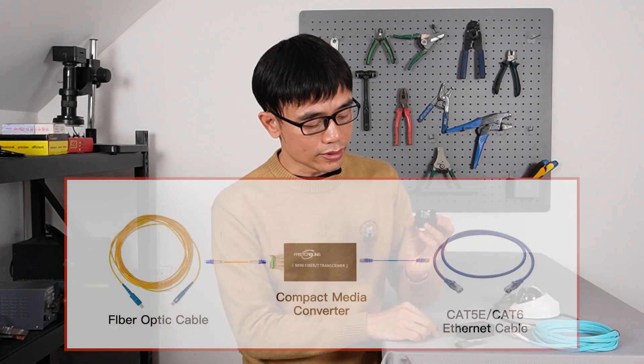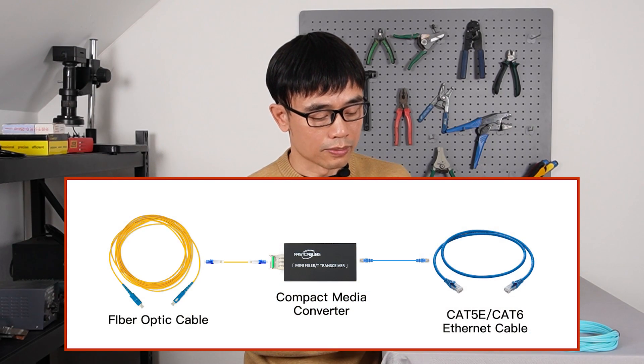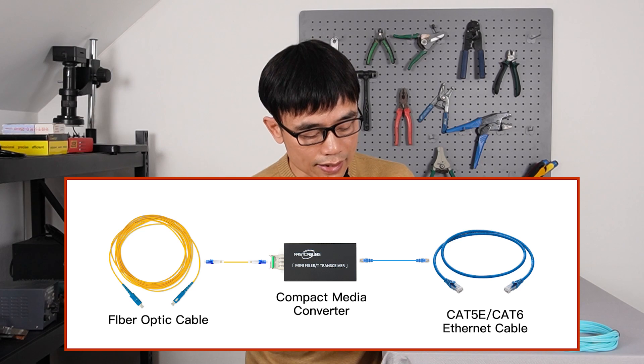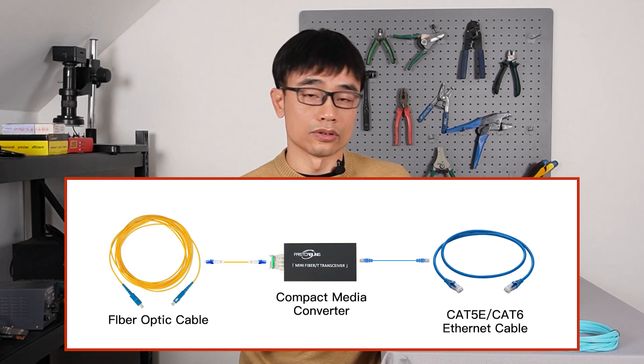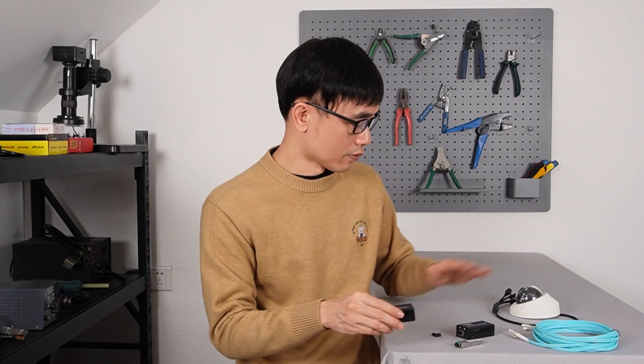The media converter will convert the fiber optic signal to electronic signal. There are two sides. On one side, we can connect the fiber optic cable to the media converter. On another side is the RJ45 network port, so we can use Cat5 or Cat6 Ethernet cable to connect this media converter to the camera.